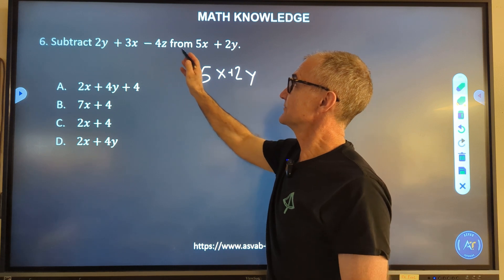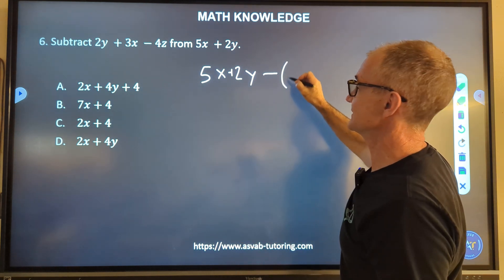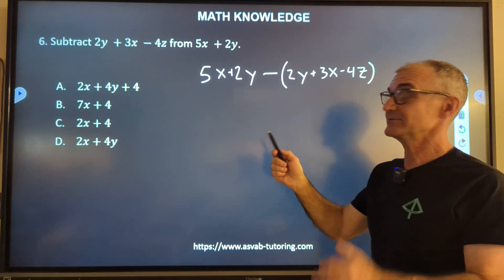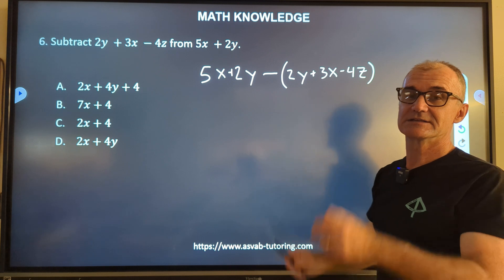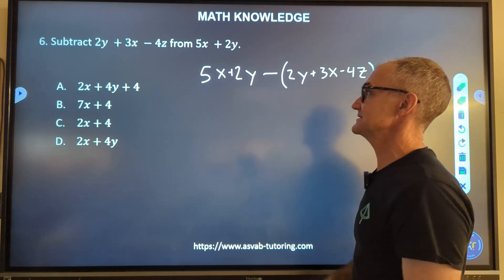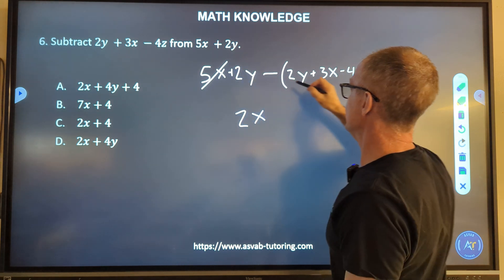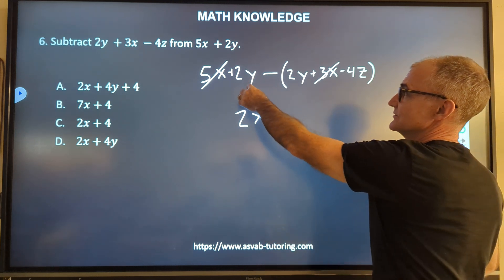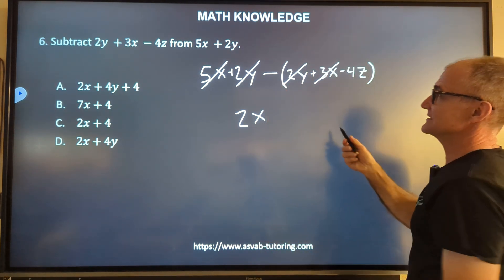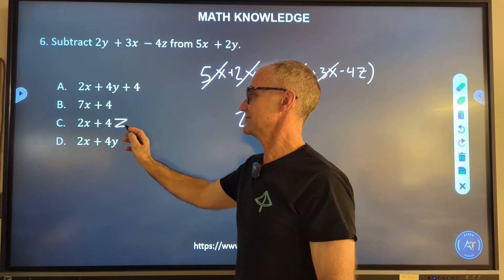Number six, subtract this from 5x plus 2y. What I'm saying here is I take 5x plus 2y minus the whole quantity 2y plus 3x minus 4z. The question I'm really being asked is, do you know to distribute that negative through the whole quantity? The second question is, do you know how to combine similar terms and not combine dissimilar terms? So I have 5x minus 3x, that's 2x. 2y minus 2y is zero. Then I have negative negative 4z, which is positive 4z. That is the correct answer. This answer is the right one, just a typo not to include the 4z there.